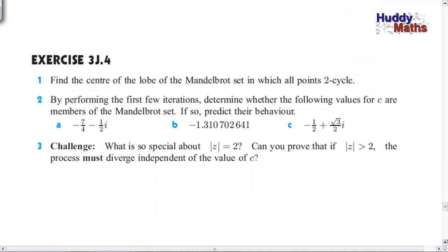Find the center of the lobe of the Mandelbrot set in which all points 2-cycle. Then think about: what is so special about the size of z being 2? Could you prove that the process must diverge independent of the value of c, as long as the size of z is greater than 2? If it's less than 2 it will stay within the set; otherwise it explodes. Why is it 2? Think about that — I'm going to show you the solutions in a minute and give you a little proof.